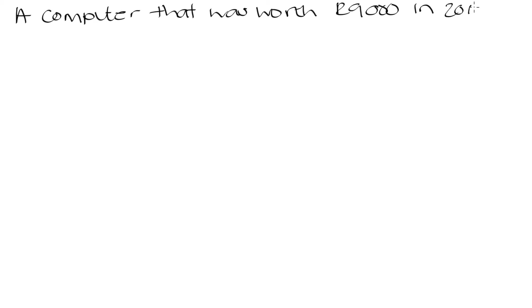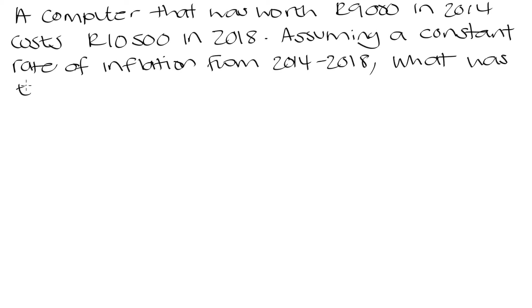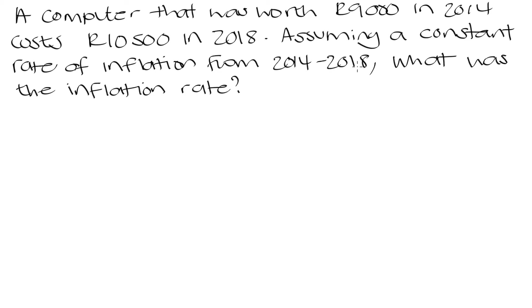Let's go over one last example. A computer that was worth 9,000 rand in 2014 costs 10,500 rand in 2018. Assuming a constant rate of inflation from 2014 to 2018, what was the inflation rate? So the computer went from 9,000 rand to 10,500 rand over four years, with a constant inflation rate, and we are asked to determine what that inflation rate was.